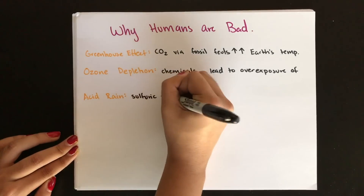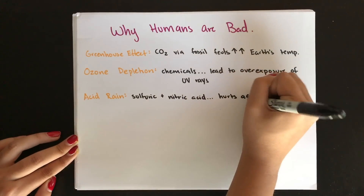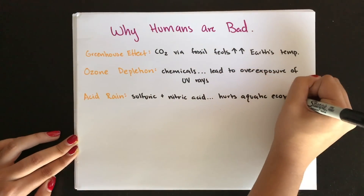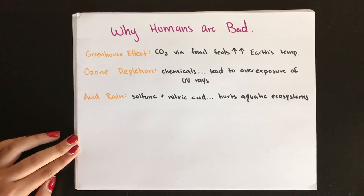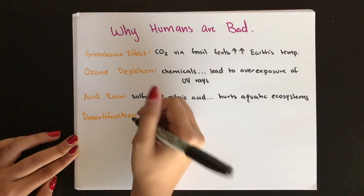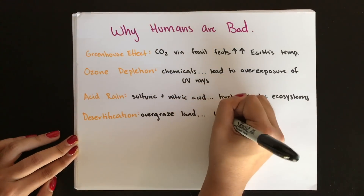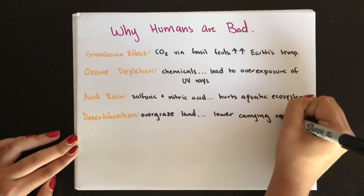Acid rain occurs when pollutants react with water droplets in clouds to form sulfuric and nitric acids. This lowers the pH of aquatic ecosystems and soil, which is harmful to organisms that can't survive in a lower pH than they're accustomed to. Desertification occurs when land is overgrazed, reducing the carrying capacity of the environment.